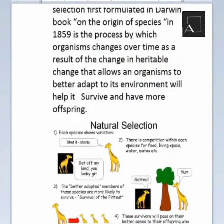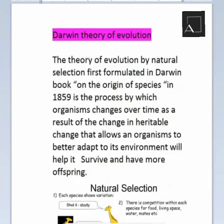Darwin's theory of evolution by natural selection was first formulated in Darwin's book 'On the Origin of Species' in 1859. It is the process by which organisms change over time as a result of heritable changes that allow an organism to better adapt to its environment, helping it survive and have more offspring. Wherever your environment is, you adapt to it, your body changes, and you adjust yourself to that environment.